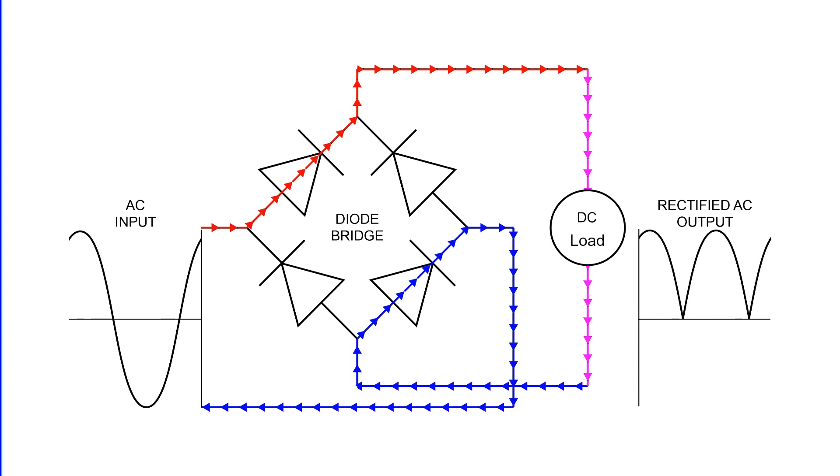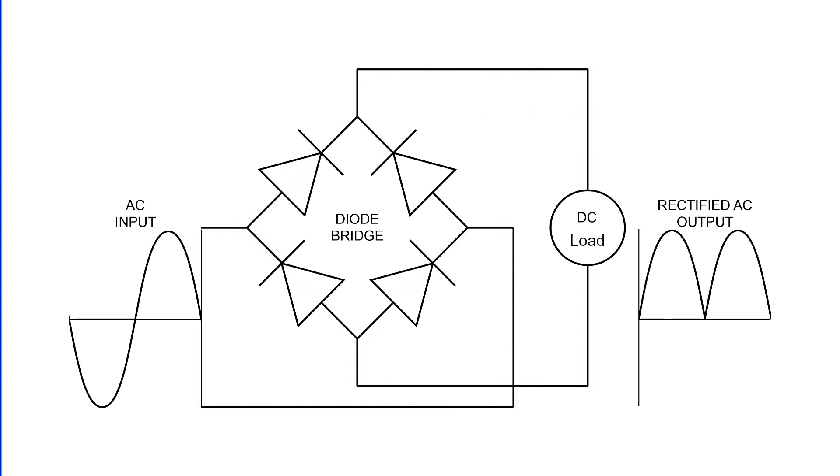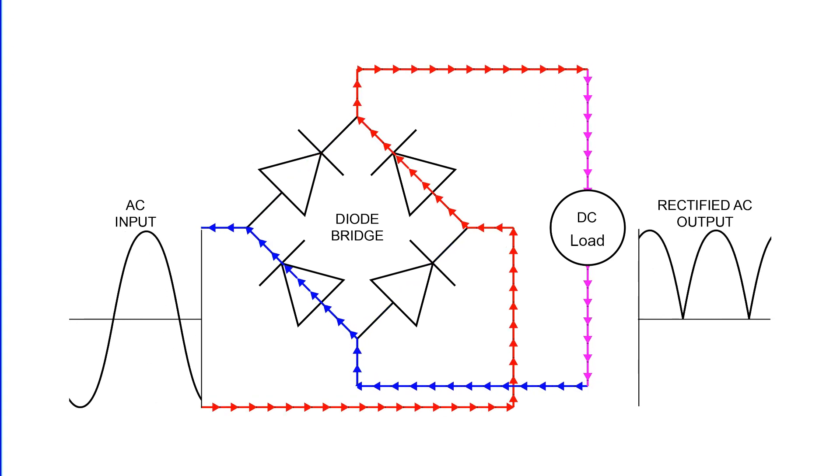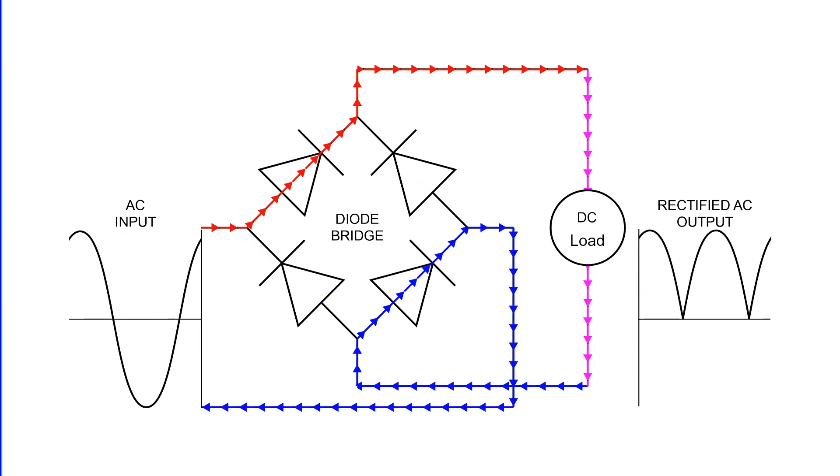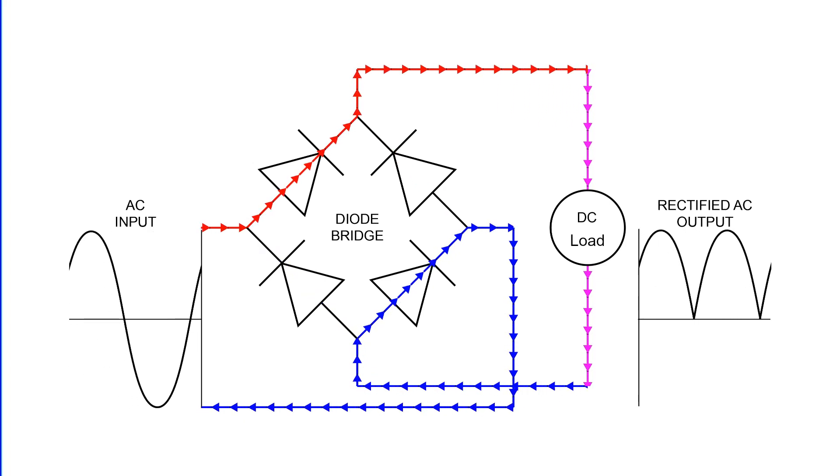A bridge rectifier is a specialized circuit designed to transition alternating current into direct current. This remarkable transformation is made possible through the use of diodes, semiconductor devices that allow current to flow predominantly in one direction.